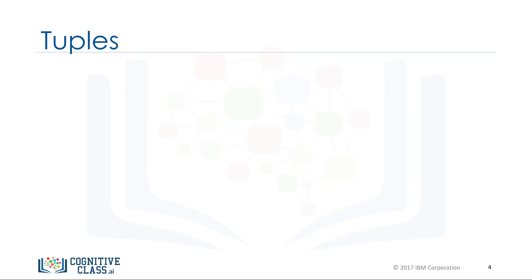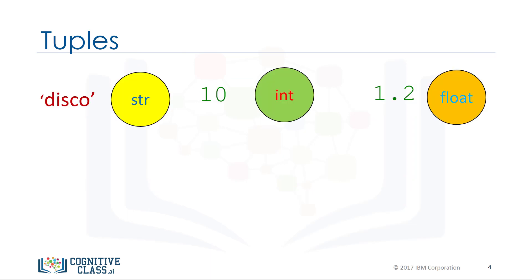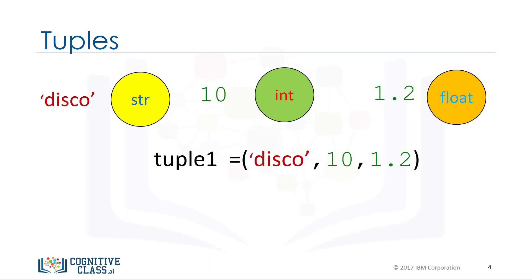In Python there are different types — strings, integer, float — and they can all be contained in a tuple, but the type of the variable is tuple.